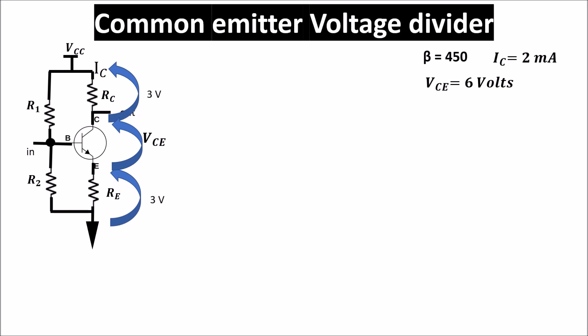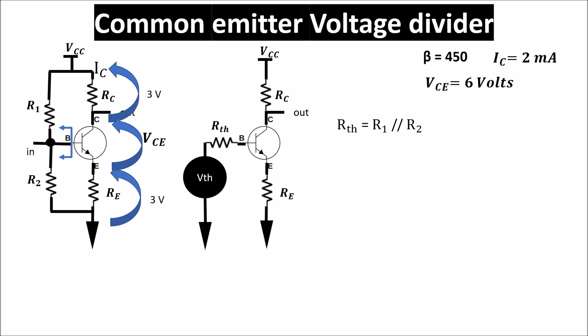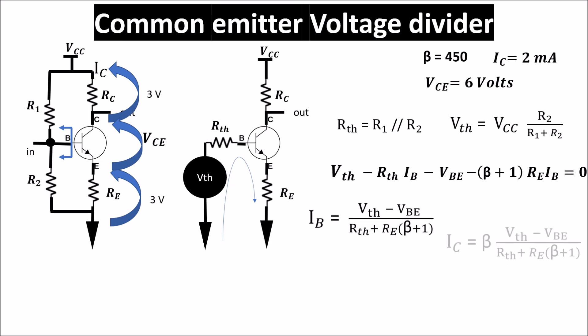This circuit can be simplified with Thevenin theorem, looking from this side, and we get this circuit where RTH is this and VTH is this one. Now this circuit is very similar to the fixed bias one with RTH and VTH instead of RB and VCC. Applying the Kirchhoff voltage law in the base circuit, we get this equation, and we find IB and IC which is beta times IB. We see that here also IC is not depending on beta if beta plus 1 times RE is much more than RTH.